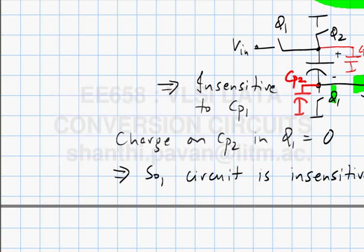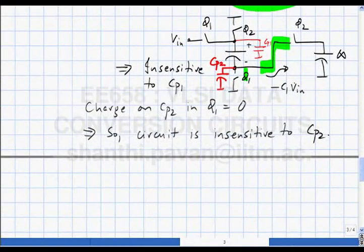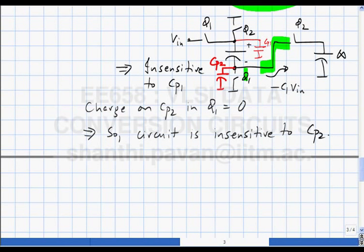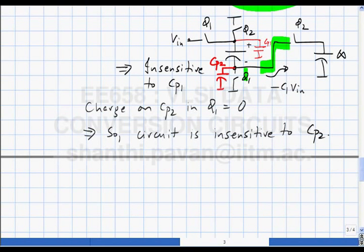There is no charge transfer happening with regard to Cp2 at all. This represents a solution insensitive to both Cp1 and Cp2. Inter-node parasitics also exist, but capacitance from node to node can always be reduced by making nodes sufficiently far apart, whereas capacitance to ground cannot be absolutely avoided.